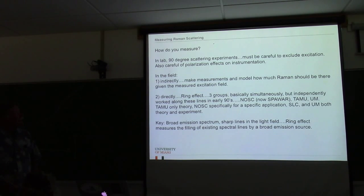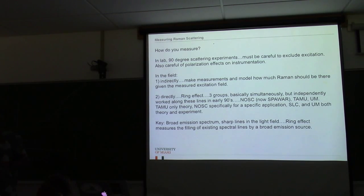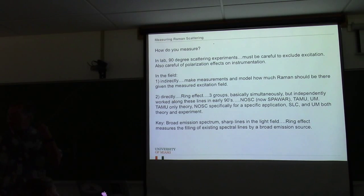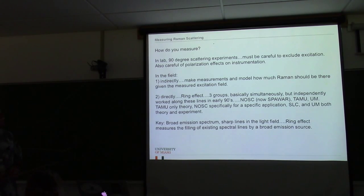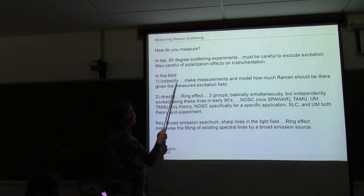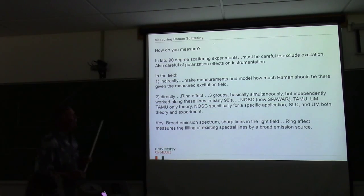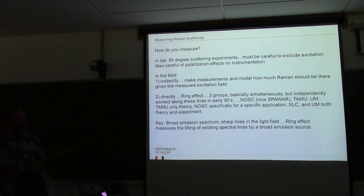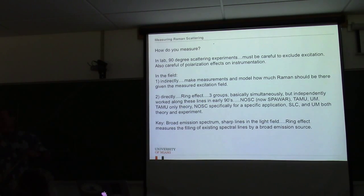How do you measure Raman scattering? In the lab, you can do 90-degree scattering experiments. You have to be very careful to exclude the excitation because we're talking about a 10⁻⁴ difference, and careful about polarization effects since the Raman scattering is polarized. In the field, you can measure indirectly — model what the light field would look like with just elastic scattering built from your IOPs, and figure Raman is the difference between what you measured and what you modeled.